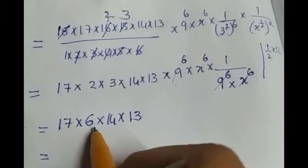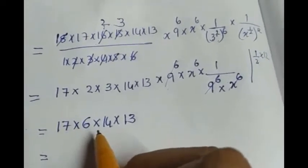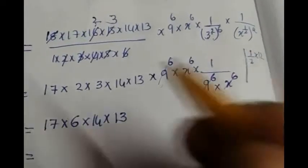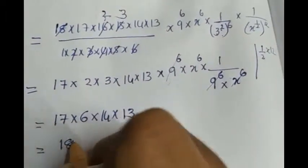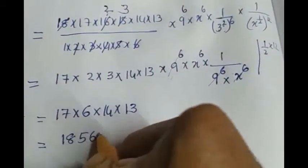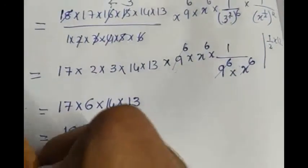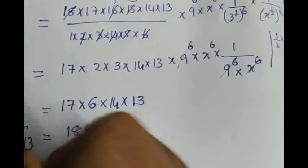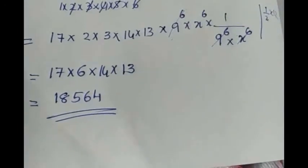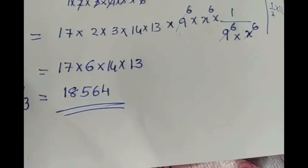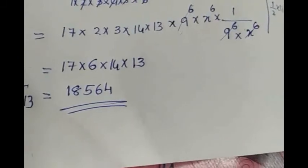So that is equal to 17 × 2 × 3 is 6 × 14 × 13 and the product of 17, 6, 14, and 13 is 18,564. So which term we have to find? We have to find the 13th term. So the 13th term in the given expansion is 18,564.